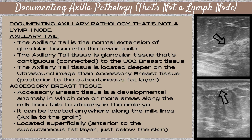When you're looking at an ultrasound image, you'll see the skin line, you'll see fat, and then you'll see the glandular tissue that's in the axillary tail. And it will be connected to the upper outer quadrant of the breast tissue.